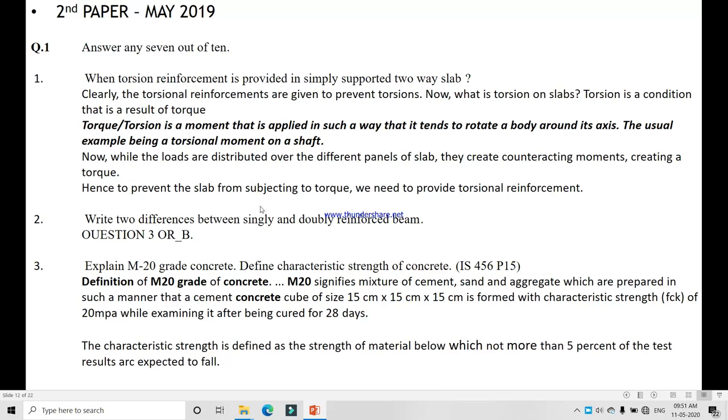To prevent the slab from subjecting to torque, we have to provide torsion reinforcement. Next, difference between singly and doubly reinforced beam, equation 3B, already discussed. Question 3: Explain M20 grade concrete, define characteristic strength of concrete. M20 signifies a mixture of cement, sand and aggregate which are prepared in such a manner that a concrete cube size 15 cm × 15 cm × 15 cm is formed with characteristic strength of 20 megapascals.